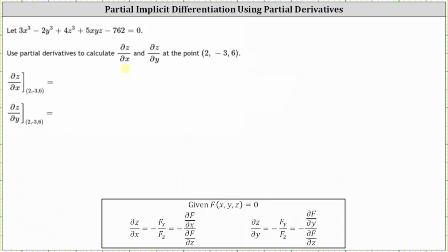Because the implicit equation is in the form F(x, y, z) equals zero, we can determine the partial of z with respect to x by taking the opposite of the partial of F with respect to x divided by the partial of F with respect to z. Similarly, the partial of z with respect to y is the opposite of the partial of F with respect to y divided by the partial of F with respect to z.